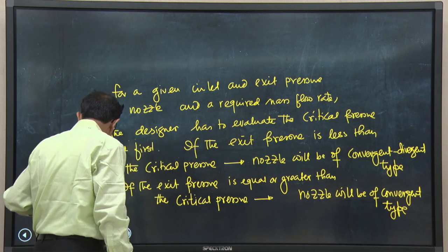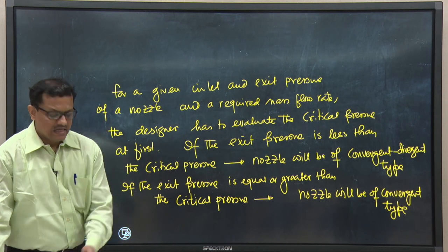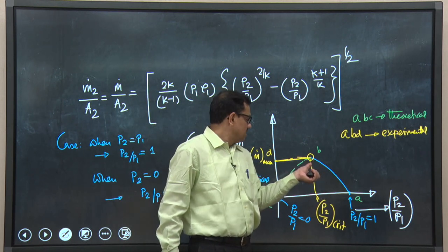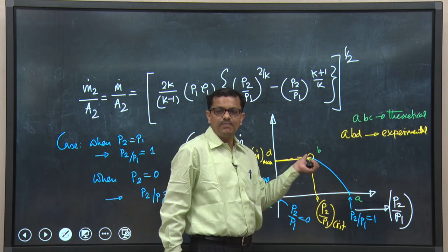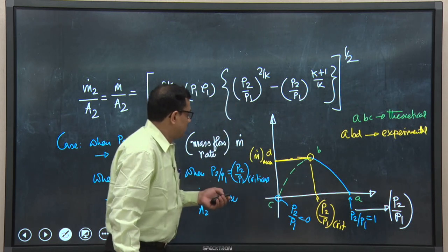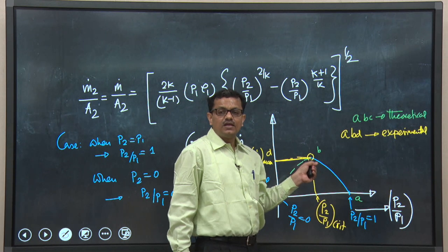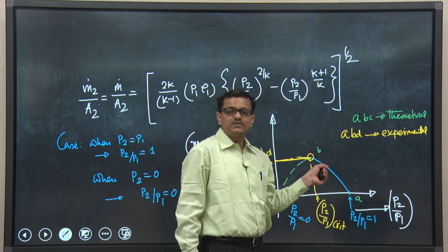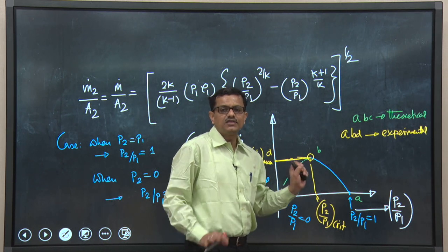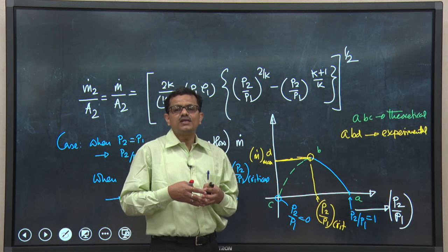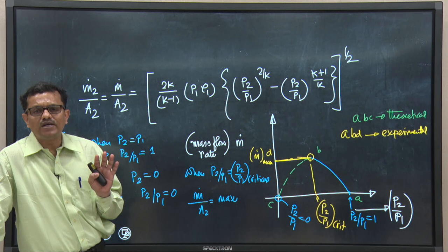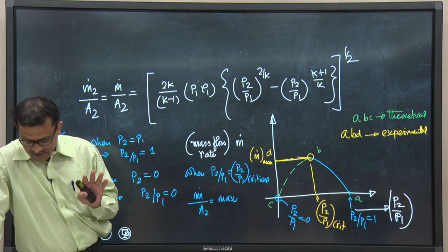One important conclusion: when the nozzle is operating at the critical pressure ratio, the exit pressure is the critical pressure, the velocity of steam at the exit is the sonic velocity, and the mass flow rate through the nozzle is maximum. At that condition, the nozzle is said to be choked. A nozzle is said to be choked when the exit pressure equals the critical pressure, giving the maximum mass flow rate.